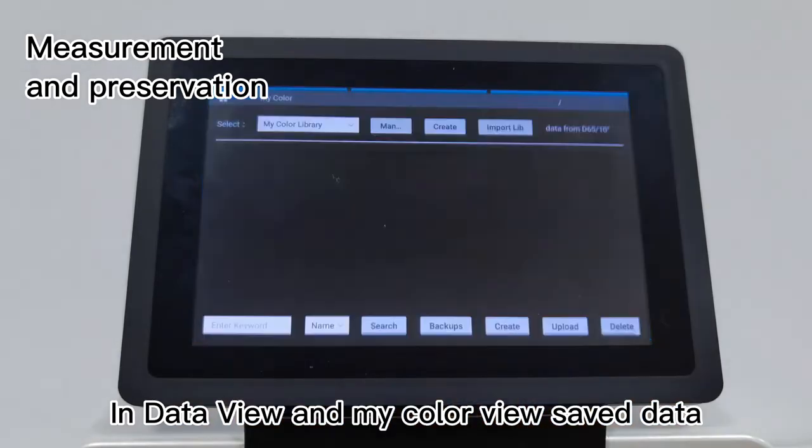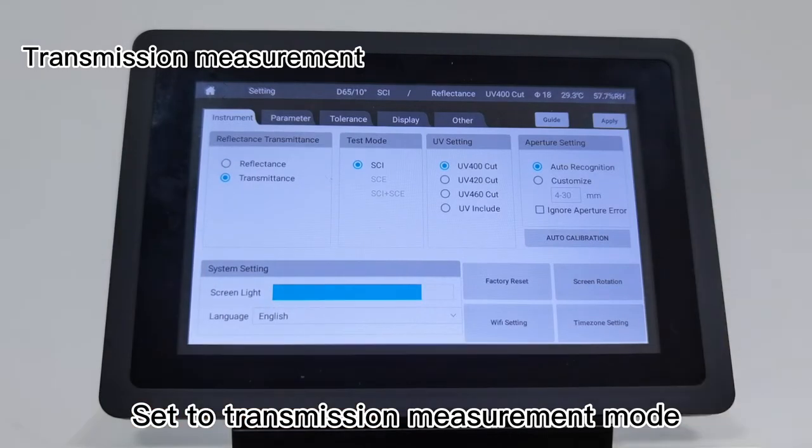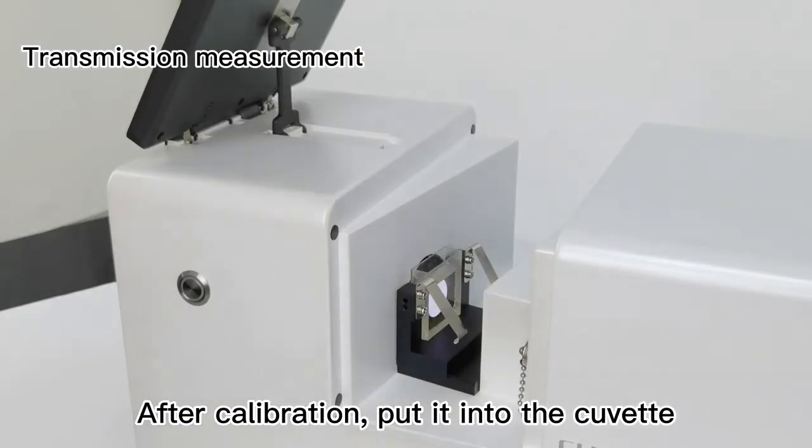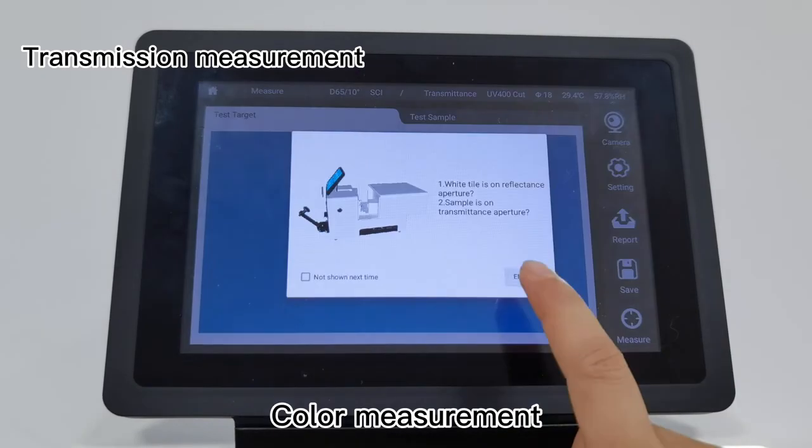Transmission measurement: Set to transmission measurement mode. After calibration, put it into the correct position for color measurement.